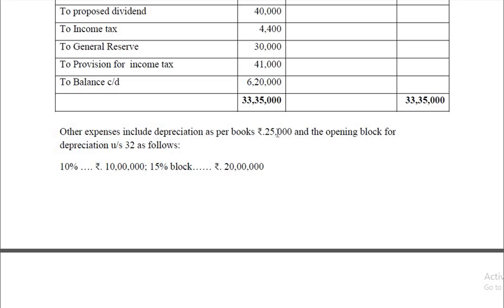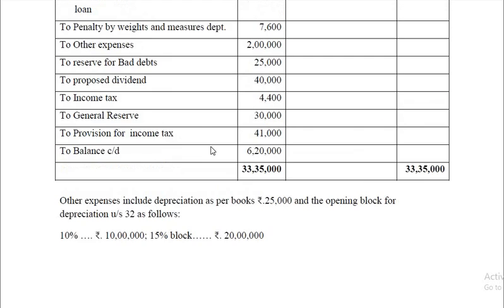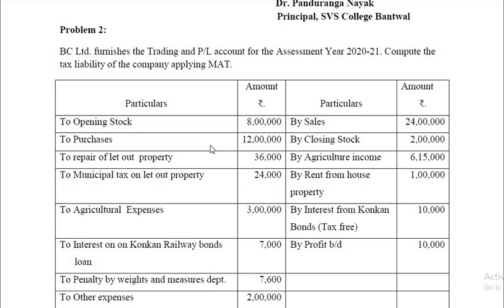So you have to add back 25,000 and deduct 4 lakh from net profit while computing business income. In the case of computation of MAT, three steps are involved: one, calculate tax on total income; two, calculate tax on book profit; and three, ascertain the tax liability by applying MAT provisions.